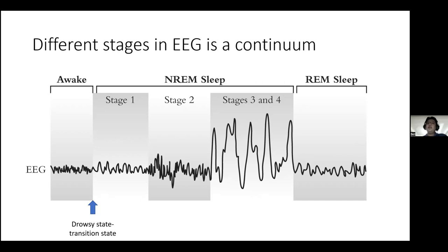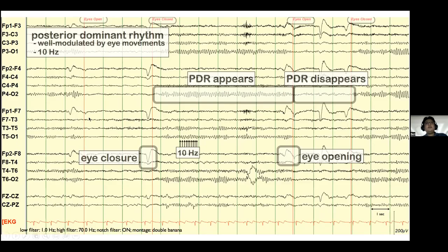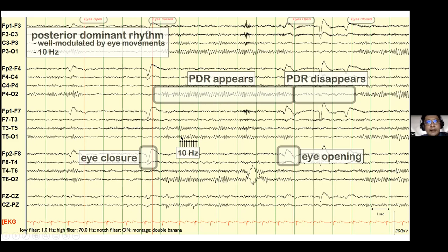A sleep cycle typically takes about 90 to 120 minutes, and during nighttime sleep you have about three to five sleep cycles. This EEG from the internet shows a waking recording with a posterior dominant rhythm of about 10 Hz — it's called posterior dominant rhythm because alpha activity is most well-formed at the back, like at P4 and O2. There is an eye-closure and eye-opening artifact: when the eyes close, the alpha activity becomes more prominent, showing this is a reactive recording.